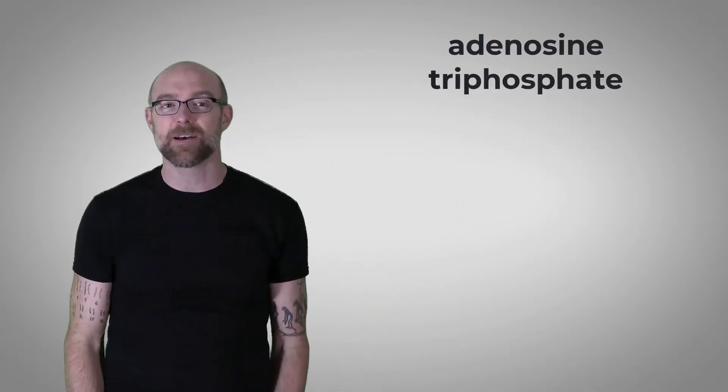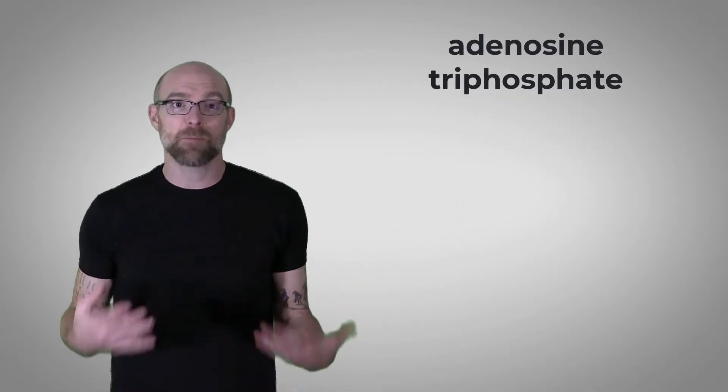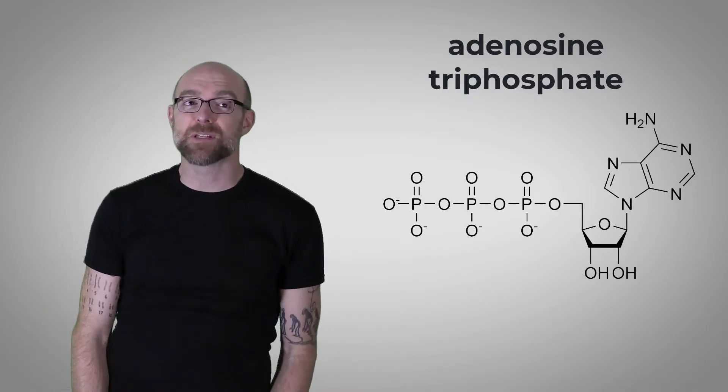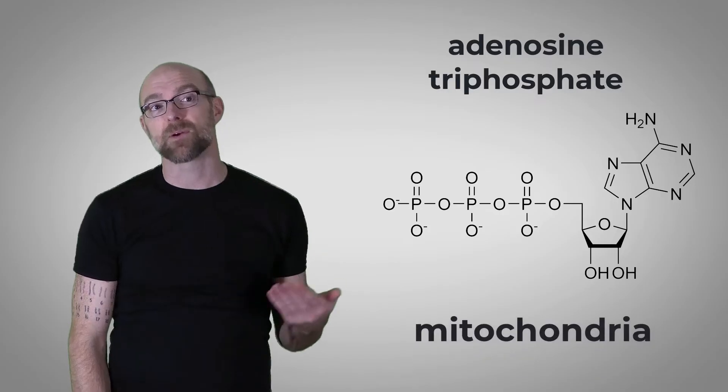Well, for starters, ATP is short for adenosine triphosphate. It's a molecule. It looks like this. Most ATP is produced in organelles in our cells called the mitochondria.